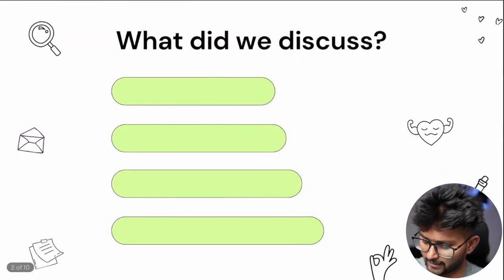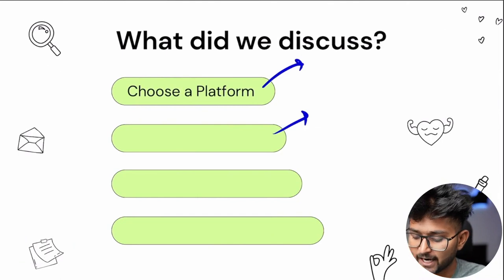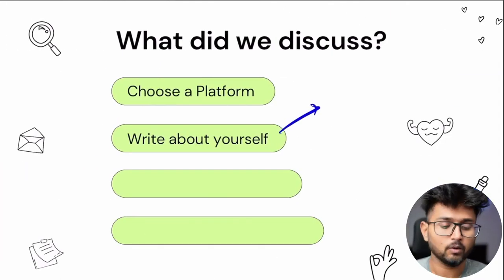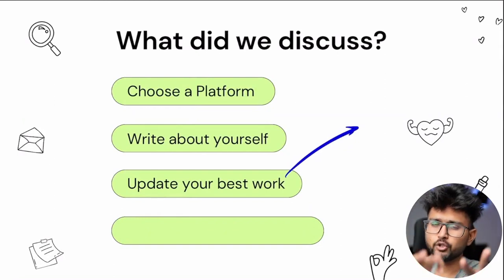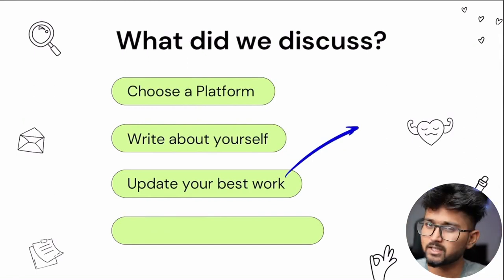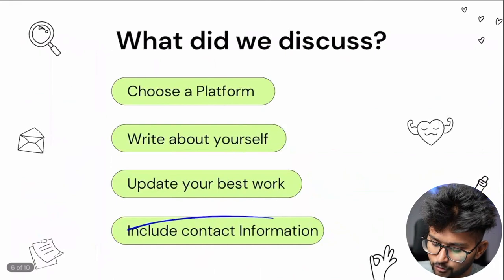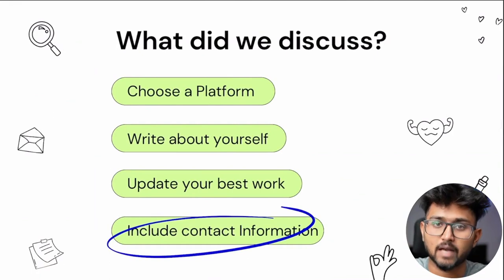Before this class you already had one session about an introduction to portfolio making. What did we discuss? The first thing was to choose a platform to make your portfolio, then write about yourself — the work you did, who you are, where you are from — all this basic data. Then you need to update and organize your best work over there.